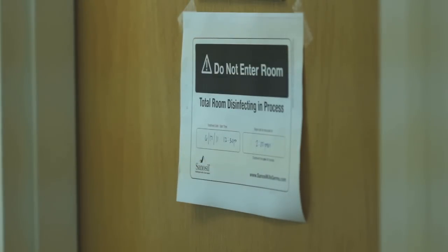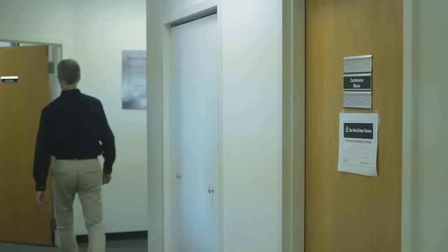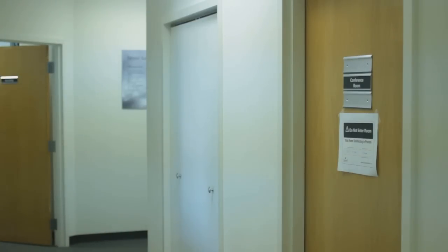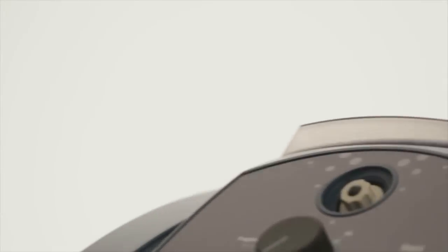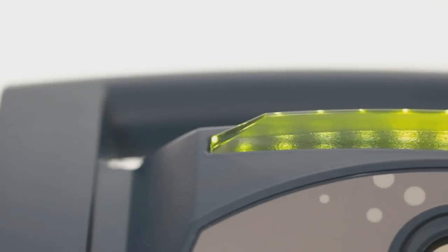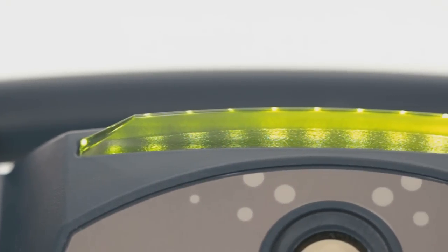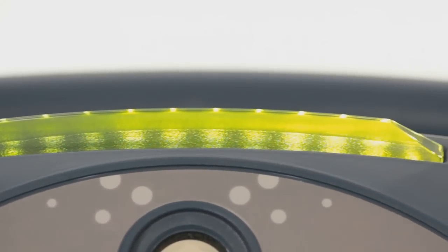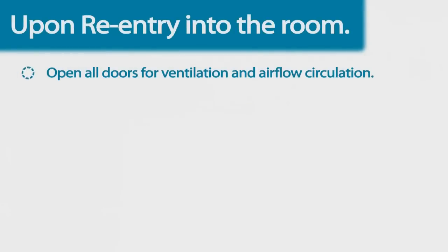When the Halo has finished dispensing, the room will be full of atomized Sanosil disinfectant and should not be entered. The status indicator will continue to illuminate a steady red. You may re-enter the room when the green status indicator light on the top of the fogger is illuminated. At this time, it is recommended that you open all doors to allow ventilation and airflow circulation in the room.